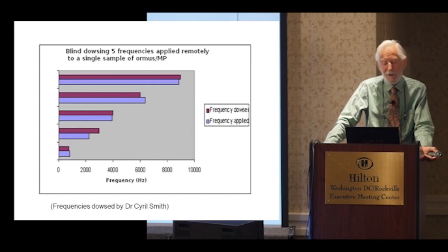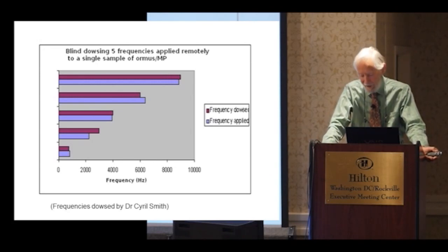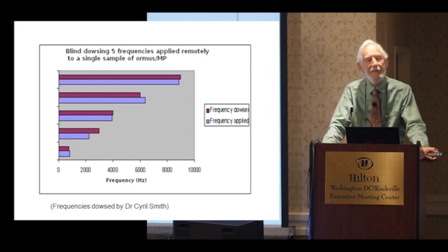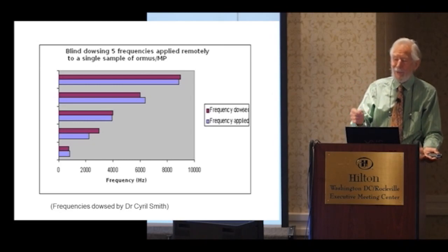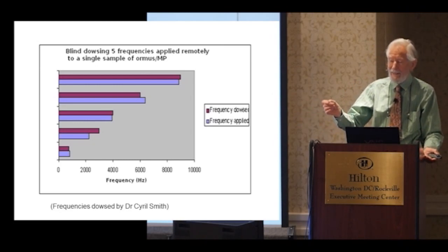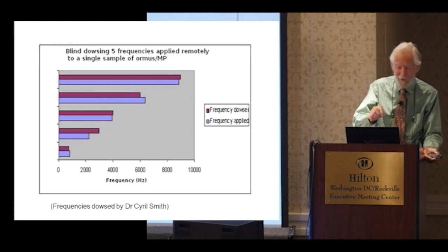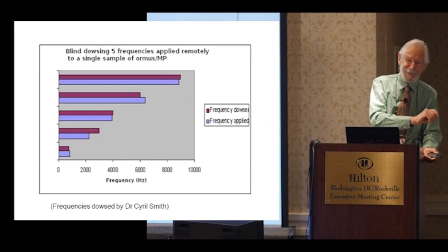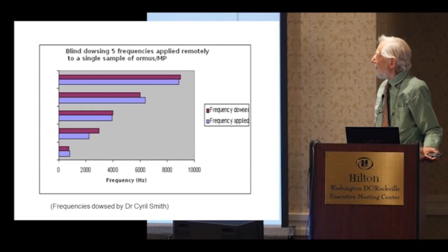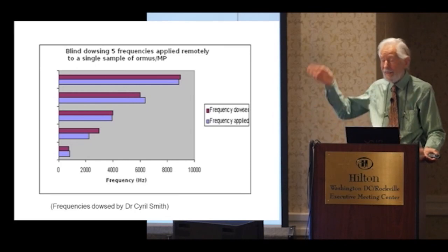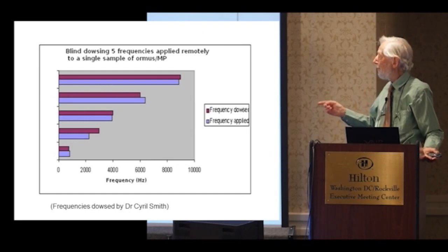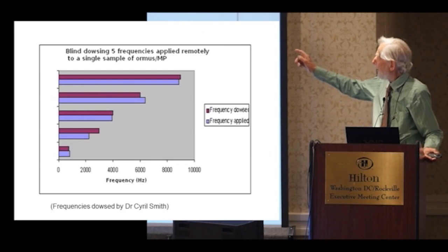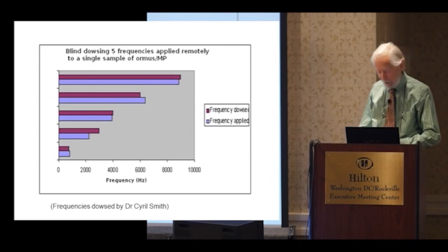Now, how can I measure the frequency? Well, you can't measure it directly. I made use of Dr. Cyril Smith, who has developed an extremely sensitive and quantitative method of dowsing frequencies. He just puts the sample between—no, he has his pendulum between the sample and a signal generator and a coil. He did this blind. I sent these samples off to him, and this is just one sample, by the way. I sent these off to him and he dowsed them blind, and you can see there was a remarkable correlation.